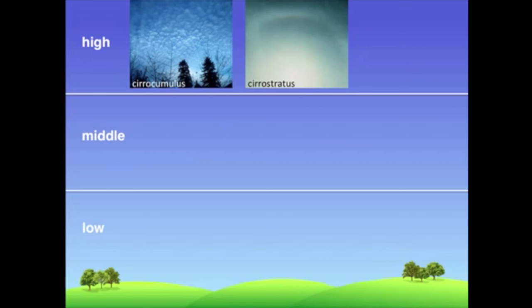You'll also find cirrostratus clouds at high altitudes. Like other stratus clouds, these form a thin sheet over the sky. And there are also cirrus clouds at high levels. These look like wispy white streamers.